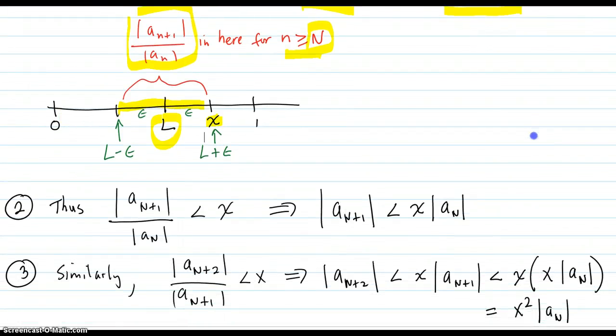So now, that means that for that a with those subscripts of capital N plus 1, and this one's capital N, that that ratio is going to be less than x. As you can see, the ratio is in this band, and all those values are less than x. So this ratio is going to be less than x guaranteed. And if it's not guaranteed, you pick the wrong capital N, you'll have to pick a larger one. So eventually, there will be that capital N so that this is true. So then you just multiply over the a_n, and those are positive because of the absolute value, so you get this statement here.